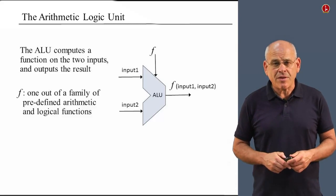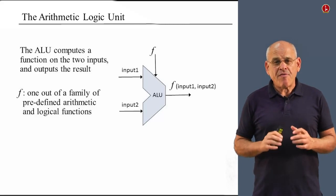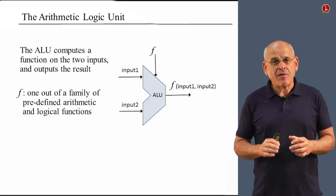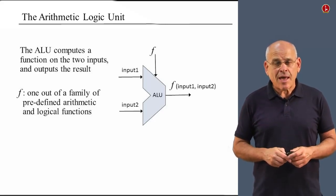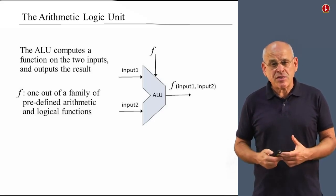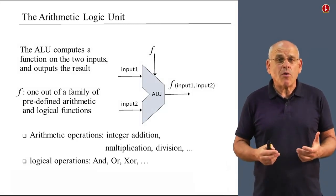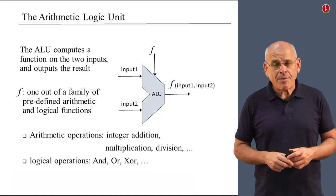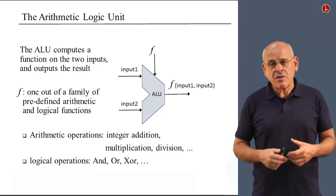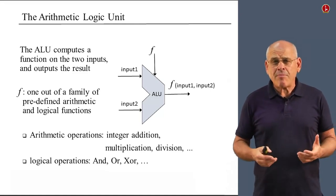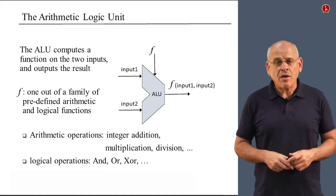The function f is one out of a family of predetermined functions that, taken together, define what this ALU is capable of doing. Some of these functions are arithmetic and some of these functions are logical. For example, common computations that ALUs typically perform are integer addition, integer multiplication, integer division, and there may be some logical operations like bitwise and, bitwise or, and so on.